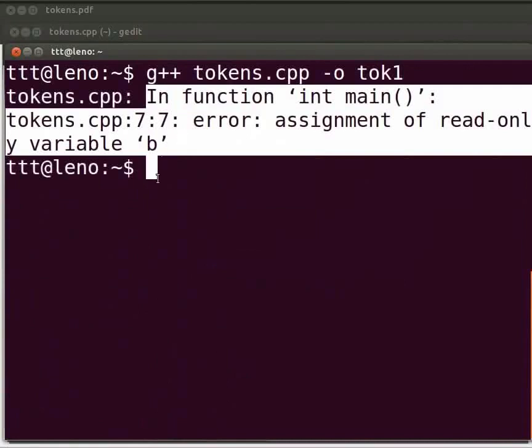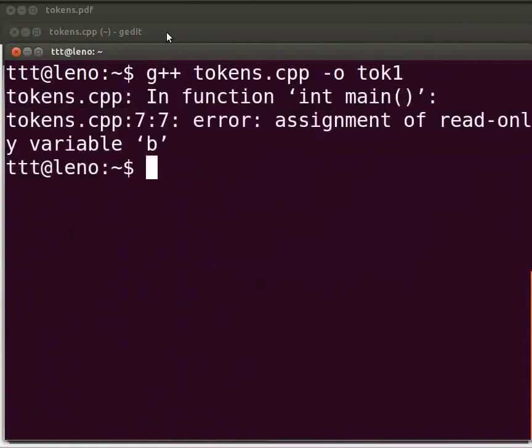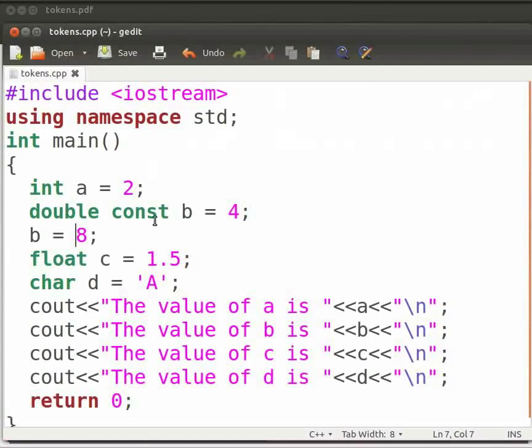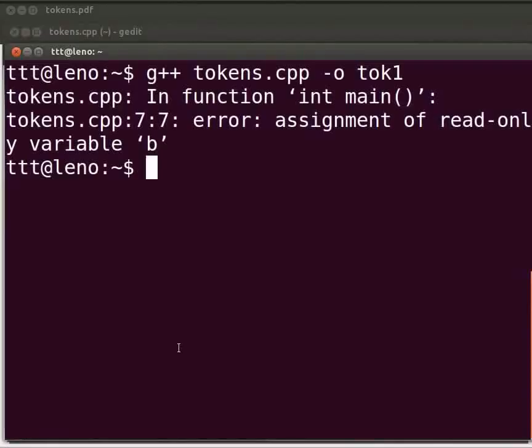Come back to our program. This is because b is a constant. Constants are fixed values. They do not change during the execution of program. Hence it is giving an error. Let us fix the error. Delete this. Click on save. Let us execute again. Come back to our terminal. Compile as before. Execute as before. Yes it is working.